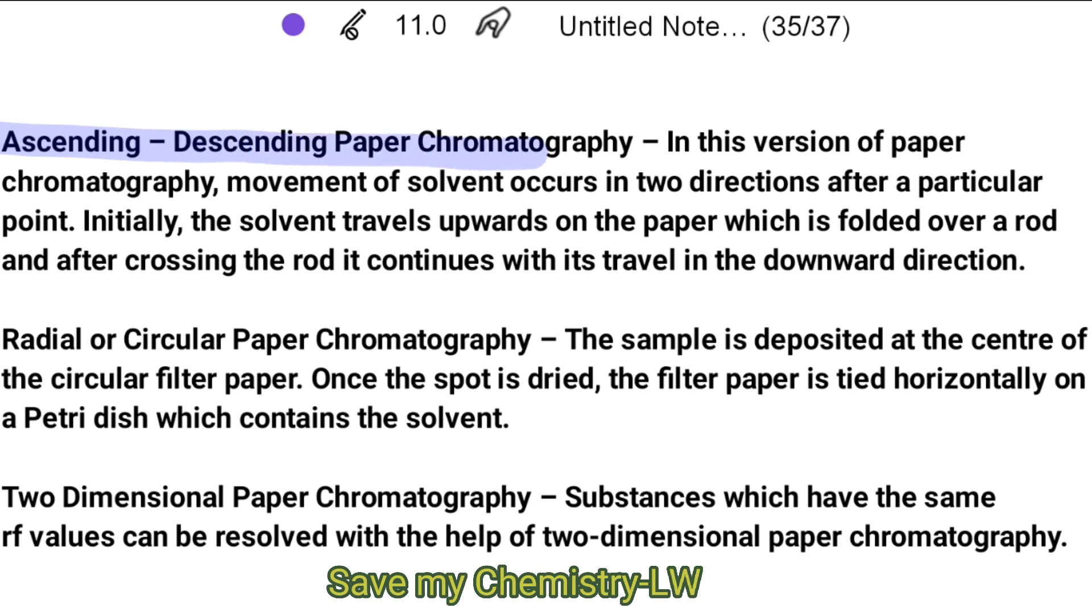Number three, ascending-descending paper chromatography. In this version of paper chromatography, movement of solvent occurs in two directions after a particular point. Initially, the solvent travels upward on the paper, which is folded over a rod, and after crossing the rod, it continues with its travel in the downward direction.